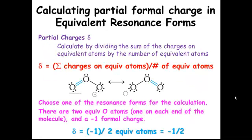When we have equivalent resonance forms, we're going to need to calculate partial formal charges. We're going to do that by dividing the sum of the charges on equivalent atoms by the number of equivalent atoms. We are going to choose one Lewis structure to do that with.